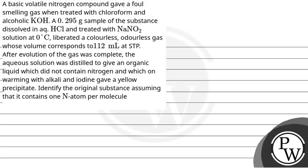Hello, Gachon. Let's see the question. The question is: a basic volatile nitrogen compound gave a foul-smelling gas when treated with chloroform and alcoholic KOH. A 0.295 gram sample of the substance dissolved in aqueous HCl and treated with NaNO₂ solution at 0°C liberated a colorless odorless gas whose volume corresponds to 112 mL at STP. After evolution of the gas was complete, the aqueous solution was distilled to give an organic liquid which did not contain nitrogen, and which on warming with alkali and iodine gave a yellow precipitate. Identify the original substance, assuming it contains one nitrogen atom per molecule.